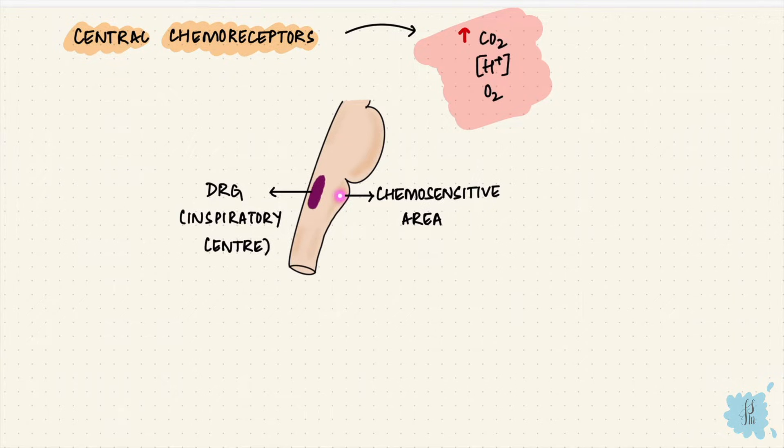So the receptors have to detect these changes. Now carbon dioxide and hydrogen ions, they go together. When carbon dioxide levels increase, hydrogen ions increase as well, and so the pH comes down. So we'll put those two together. Changes in these two are detected by the central chemoreceptors, not oxygen.